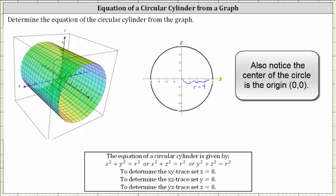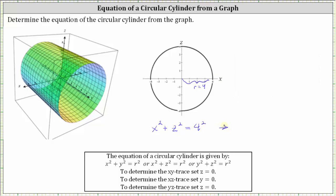And because this is the xz trace, the equation of this circle is x squared plus z squared equals four squared. And this also gives us the equation of the circular cylinder, which is x squared plus z squared equals 16.